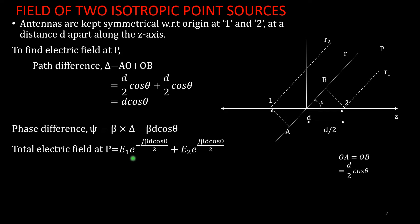In short, the total electric field at point P due to two antennas placed along the z-axis, symmetric with respect to the origin, is: E_total = E1·e^(-jψ/2) + E2·e^(jψ/2), where ψ = β·d·cos(θ).